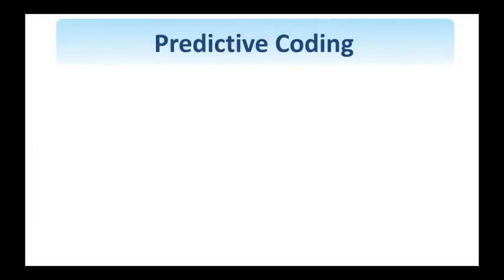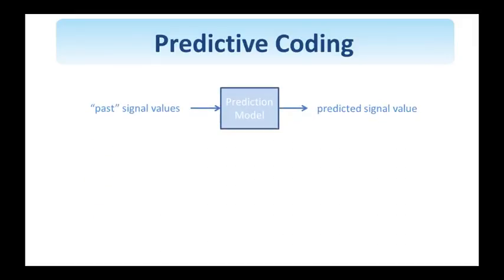Prediction is used extensively in signal processing and certainly in compression. Based on a prediction model we can predict the signal value at a given pixel using values from the past. That is values that have been processed and we therefore know their values. The past refers to spatial or temporal or spatiotemporal past and of course it also relates to the direction the image is processed, that is left to right and top down.